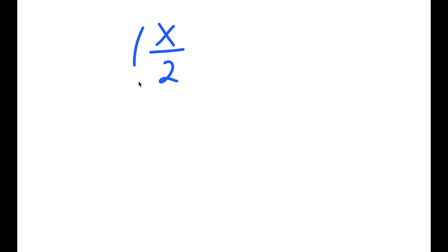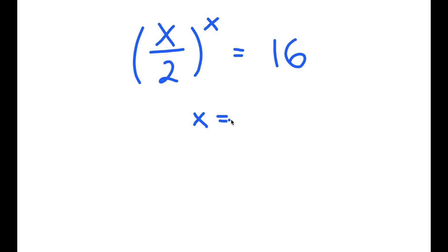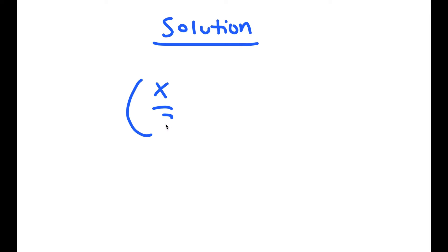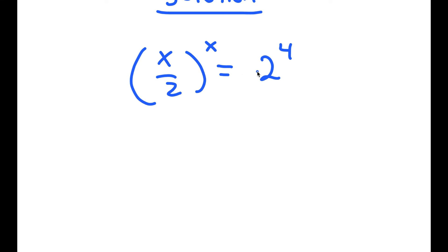In this video, I'm going to solve the equation x over 2 to the power of x is equal to 16. To solve this, I want to find the value of x. For my solution, I'm going to first start by rewriting 16 as 2 to the power of 4. So I have x over 2 to the power of x is equal to 2 to the power of 4.